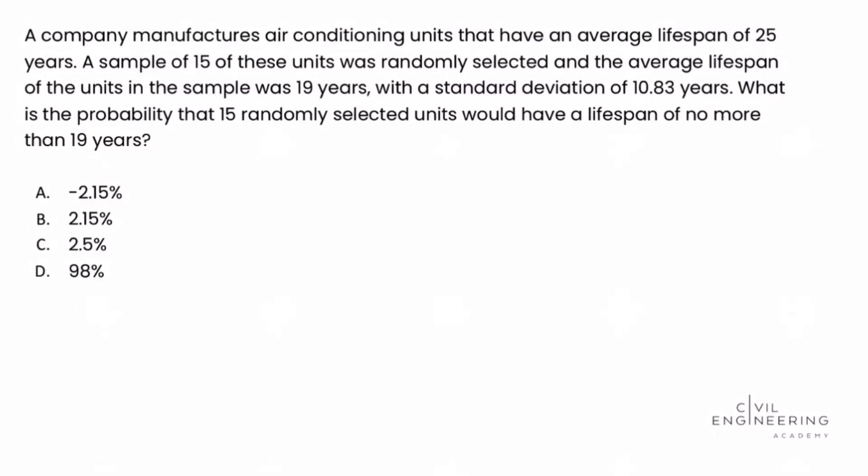The question asks: a company manufactures air conditioning units that have an average lifespan of 25 years. A sample of 15 of these units was randomly selected and the average lifespan of the units in the sample was 19 years with a standard deviation of 10.83 years. What is the probability that 15 randomly selected units would have a lifespan of no more than 19 years?